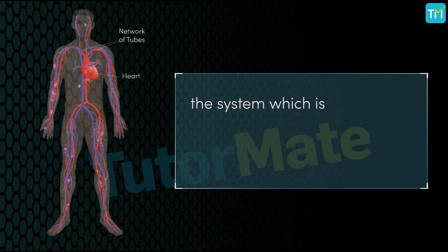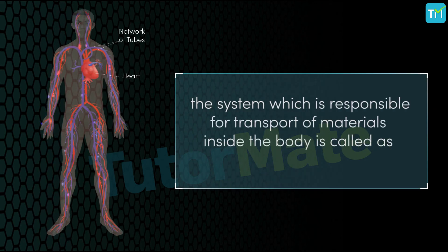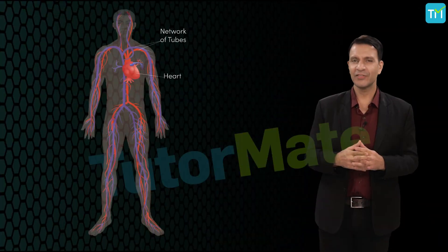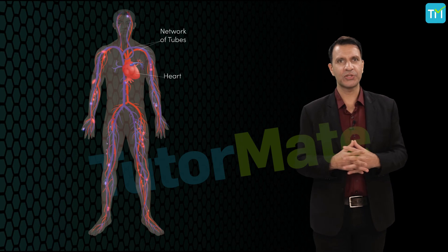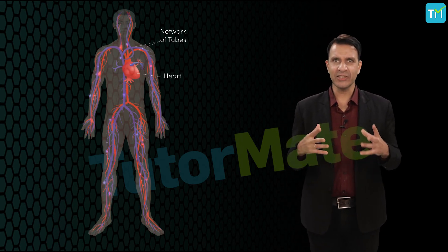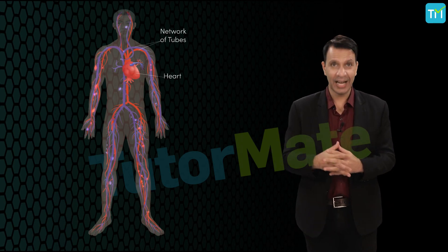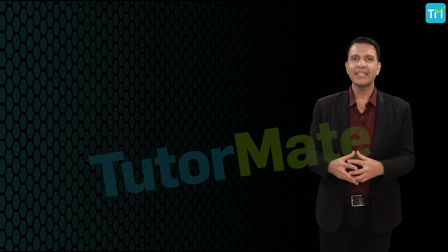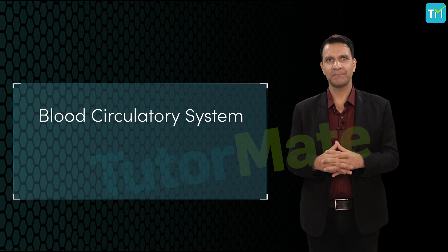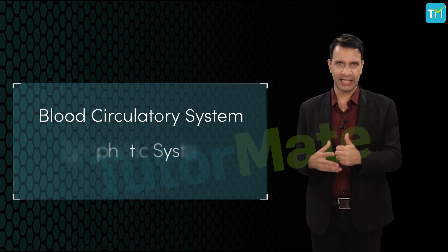In human beings, the system which is responsible for transport of materials inside the body is called the circulatory system. There are two circulatory systems through which materials are transported to relevant organs and tissues. They are: first, the blood circulatory system, and second, the lymphatic system.